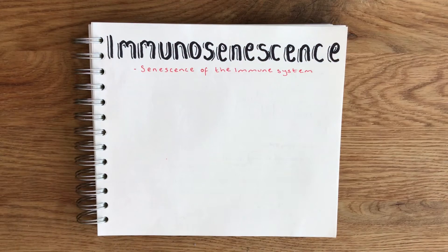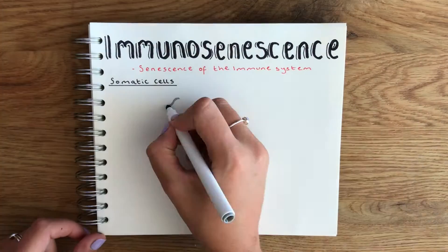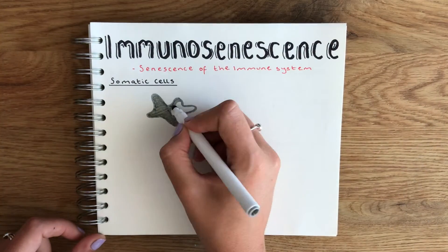In the context of the immune system, the senescence phenomenon has been termed immunosenescence, and it essentially refers to the gradual deterioration of immune function that occurs with age.